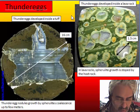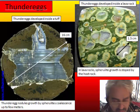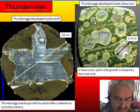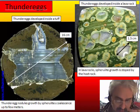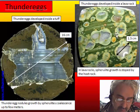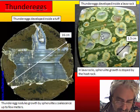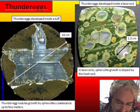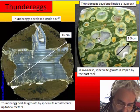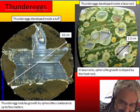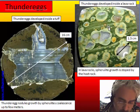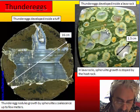Spherulites start growing and can grow in lava or in obsidian, as is the case of rainforest jasper from Australia — where we can see the flow banding of the original obsidian. Small spherulites can have a small fracture inside filled with chalcedony, but they cannot grow because they are inside a strong, hard rock. So there is an impediment to growth.